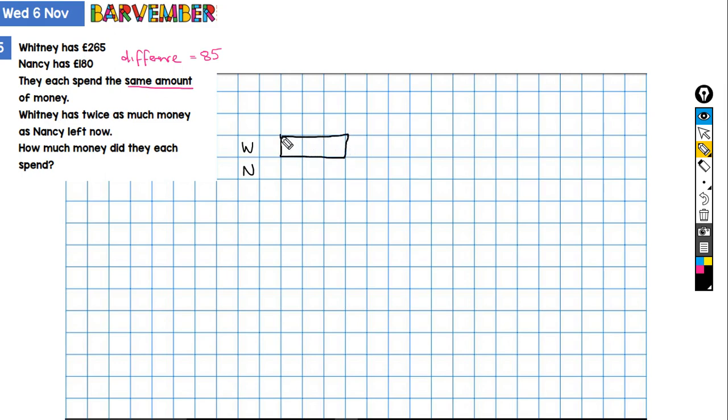That's Nancy's amount and this is Whitney. This is what Nancy has at the end and this is what Whitney has at the end.